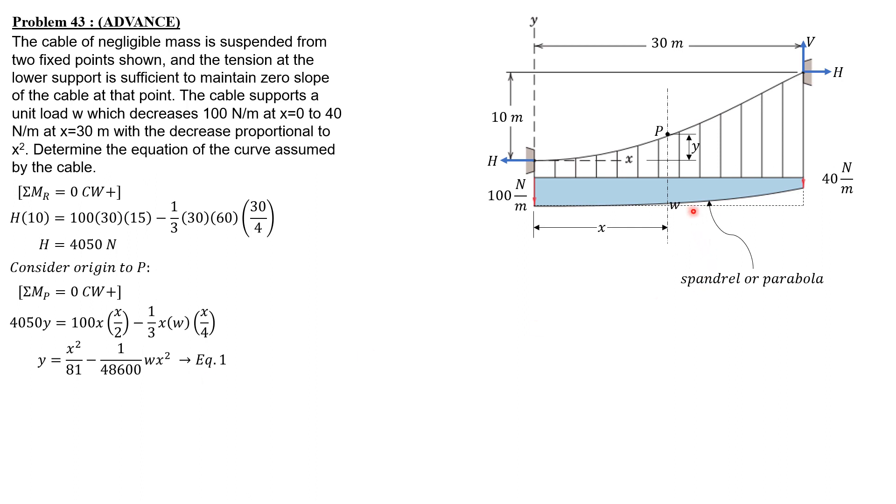Since W is proportional to the square of the distance x, by squared property of parabola, W as to x square equals 60 (100 minus 40) as to 30 square. So that means W is x square over 15, substitute into equation 1. Y equals x square over 81 minus 1 over 48,600 times x square over 15 times x square. Therefore, the cable is defined by this curve: Y equals x square over 81 minus x to the fourth over 729,000. That's the equation of that cable.